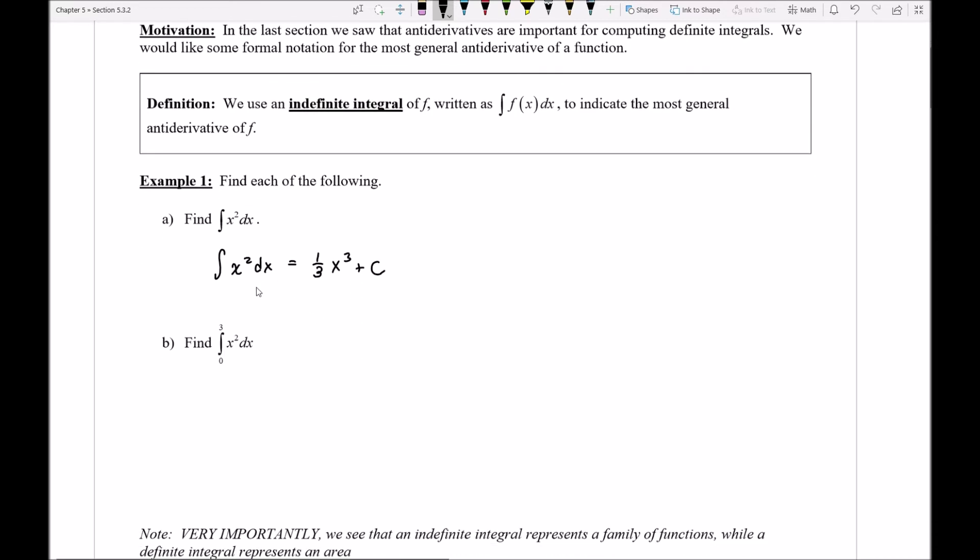Now if I compare and contrast that with part B, notice here that I'm getting a definite integral which is now asking a question about an area under a curve. So I would have to go ahead and say that first we note that f of x equals x squared is continuous on the interval from 0 to 3. So I know that I can use fundamental theorem of calculus part 2 to evaluate this.